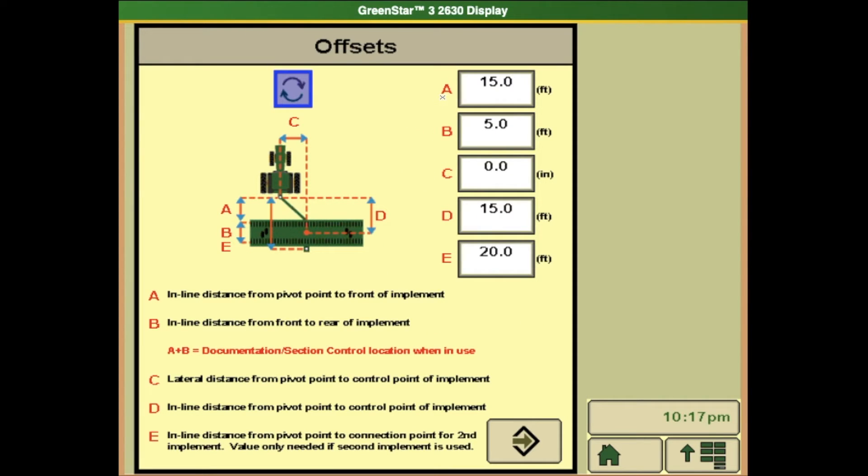Letter A is the inline distance from pivot point to the front of the implement. Letter B is the inline distance from the front to the rear of the implement. Letter C is the lateral distance from pivot point to the control point of the implement.